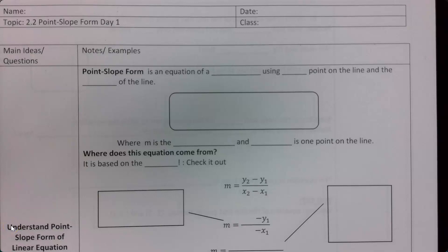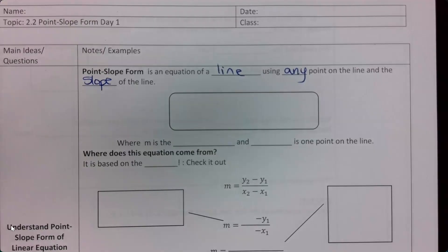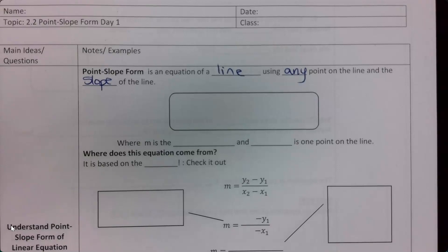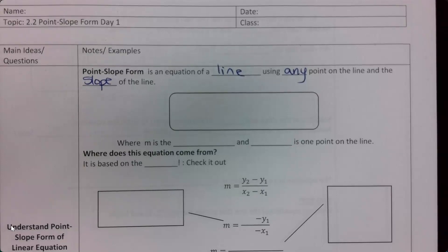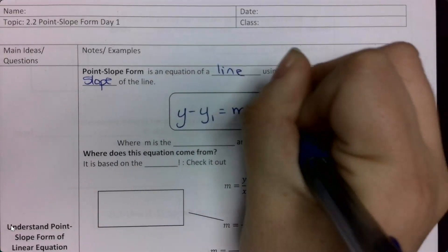Today we are starting on point-slope form — the equation of a line using any point on a line and the slope of the line. This is what you use if you just know one point and the slope. The formula is y minus y sub 1 equals m times x minus x sub 1.